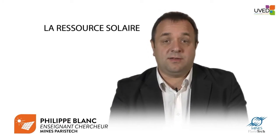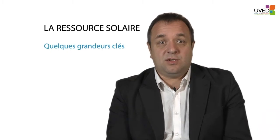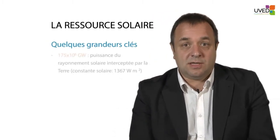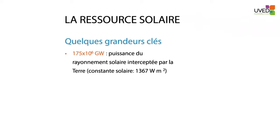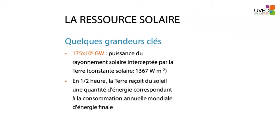The Sun is 150 million kilometers away from the Earth, and in spite of the distance, the quantity of energy that the Sun sends to us is huge. Any time, the fraction of power irradiated by the Sun and intercepted by the Earth is 175 million gigawatts.